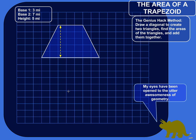The way you do it is you cut a trapezoid into two triangles, then find the area of the triangles, add those up, and you've got the area of the trapezoid.